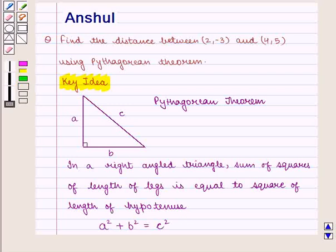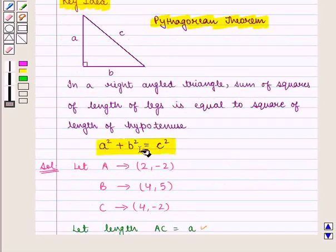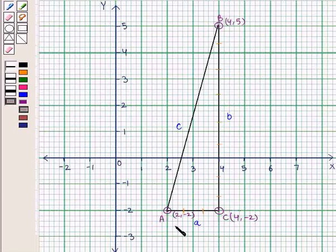From the key idea, we know that Pythagorean theorem states that in a right-angled triangle, sum of squares of length of legs is equal to square of the length of hypotenuse. So a² + b² = c². Here in triangle ABC, AB is the hypotenuse and AC and CB are the two legs of the right-angled triangle.